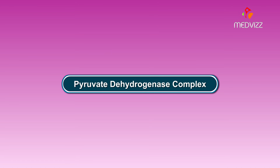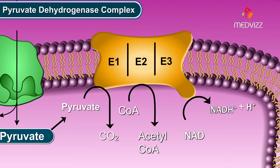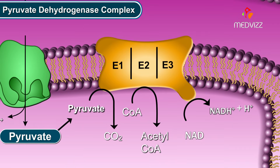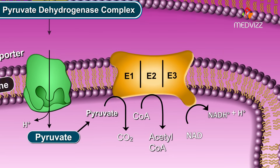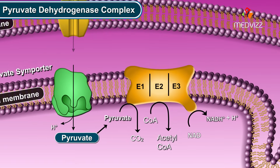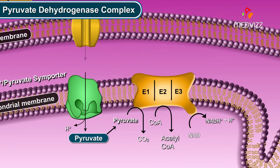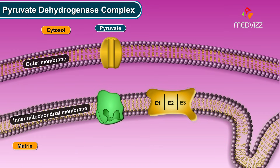The PDH complex, also known as the pyruvate dehydrogenase complex, is a multi-enzyme complex present on the inner mitochondrial membrane.